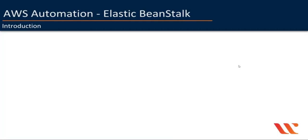In today's lecture, we will discuss about Elastic Beanstalk, an automation service provided by AWS for web applications or worker applications. We will first take a look at what it is, how it works, and then we will have a quick demo session on how you can automate your application deployments using Elastic Beanstalk. Let's get started.